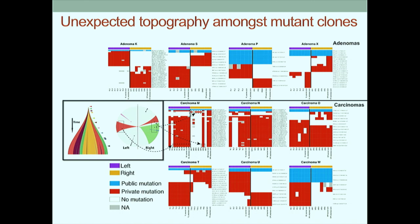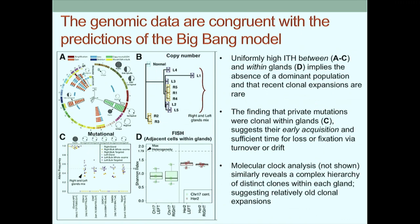If we flip this cross-sectional view on its side, where distance from the vertical line indicates increasing time from the tumor's origin, mutations that accrue late are present in increasingly diminutive fractions of the total population. When we summarize all the data, there's evidence for uniformly high intratumor heterogeneity at every spatial scale - bulk tumor, single glands, or single cells. This high variation implies the absence of recent clonal expansions. Moreover, mutations were clonal within a gland despite being subclonal in the bulk tumor, suggesting they had time to fixate or be lost.